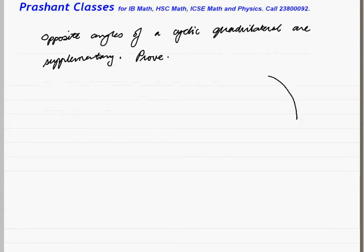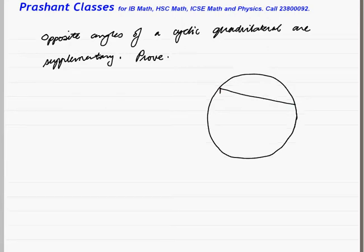We have been given a circle with points A, B, C, D forming a cyclic quadrilateral. We have to prove that the opposite angles are supplementary.